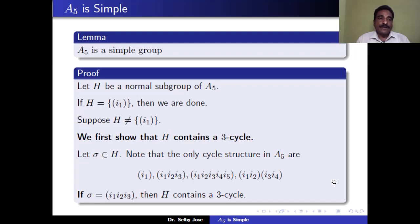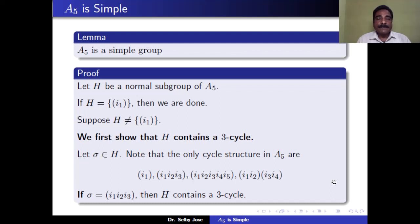A5 is the alternating group consisting of all even permutations on 5 symbols, which is a subgroup of S5, where S5 is the set of all permutations on 5 symbols. The order of S5 is 5 factorial, which is 120. Half of them are even permutations, so A5 contains 60 elements. Therefore A5 is a group of order 60, and we want to show A5 is a simple group.